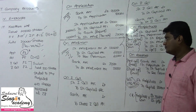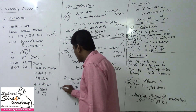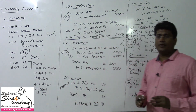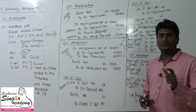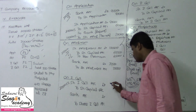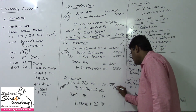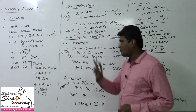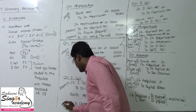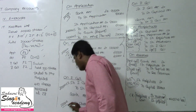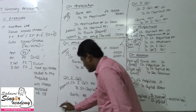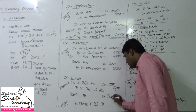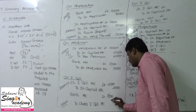On first call: 20,000 shares at ₹2 each gives ₹40,000. Bank Account is debited and Share First Call is credited; Share First Call is debited and Share Capital is credited for ₹40,000. However, Subin, who holds 500 shares, defaulted — 500 into ₹2 equals ₹1,000 short — so the actual bank receipt is ₹39,000.